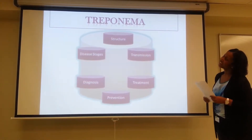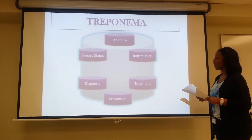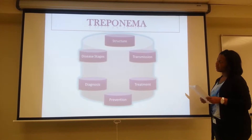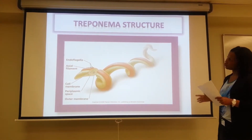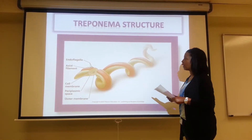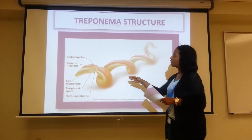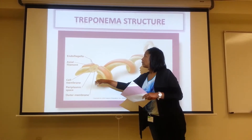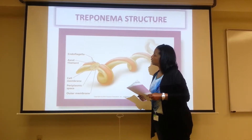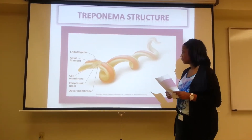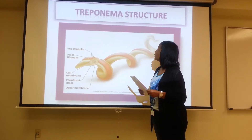In the next few slides we will discuss the structure, disease phase, transmission, diagnosis, treatment, and prevention of Treponema. Here you see a picture of the spirochete bacterial structure of Treponema. You have the endoflagella here, an axial filament here, and the cell membrane, which is surrounded on the inside by the periplasmic space. On the outside is the outer membrane of the Treponema.